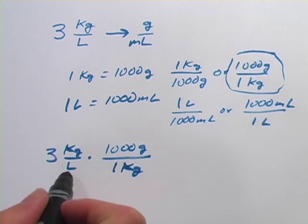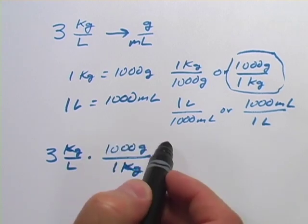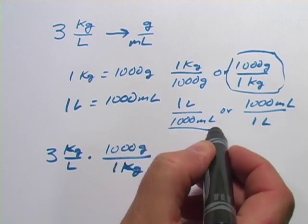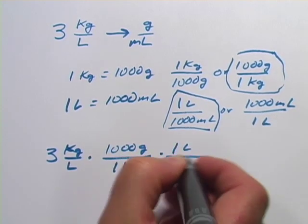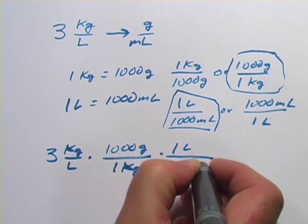The next thing I'm going to do is convert my liters to milliliters. And here, the liters are on the bottom, so I want liters on the top in my conversion factor. So it looks like this one is the one we'll use. So one liter is 1000 milliliters.